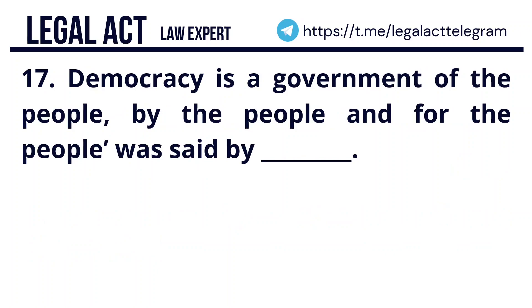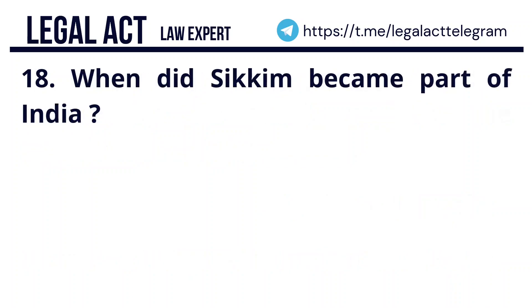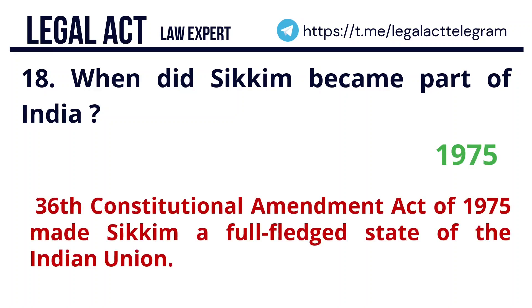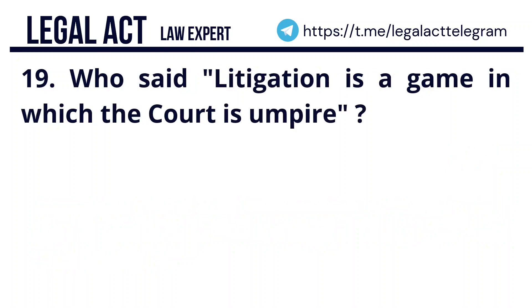Question 17: 'Democracy is a government of the people, by the people, and for the people' was said by Abraham Lincoln. He was the 16th President of the United States. Question 18: When did Sikkim become part of India? The answer is 1975. The 36th Constitutional Amendment Act of 1975 made Sikkim a full-fledged state of the Indian Union. Question 19: Who said 'litigation is a game in which the court is the umpire'? It was said by Pollock.